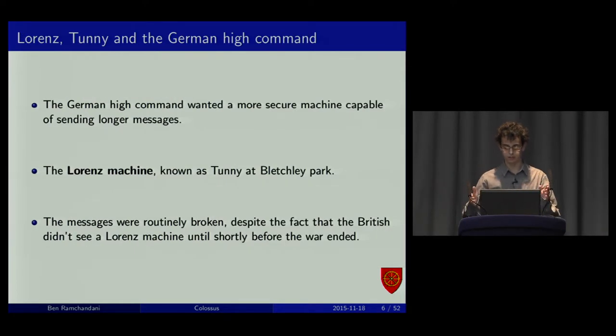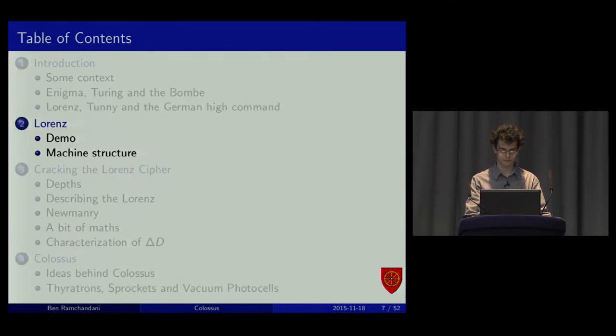I'm going to be talking mostly about the Lorenz machine, so that's what the German high command used to send much longer messages between generals. The British never actually saw this machine until almost at the end of the war, but still managed to break their messages fairly consistently. So, I'll try and show you how this worked.